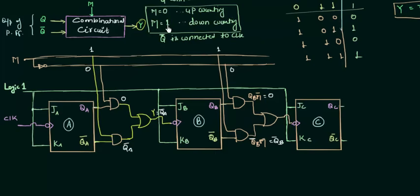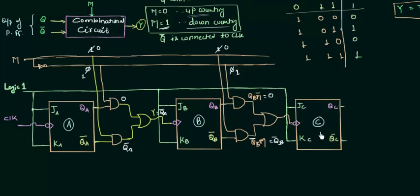When M equals 1 it performs down counting, and when M equals 0 it performs up counting. You can verify this by replacing 1 with 0 and 0 with 1 in M — you will find that QA is fed as the input to the next flip-flop and QB is fed as the input to the next flip-flop, confirming up counting. This is all you need to keep in mind regarding the up-down counter. In the same circuit you have both up and down counting capability.